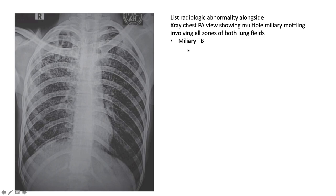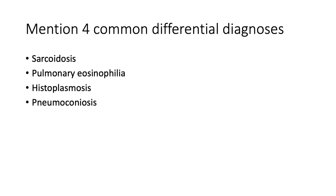This PA film shows multiple miliary mottling — the so-called millet seeds — involving both lungs bilaterally. This is miliary TB, speaking to dissemination of TB into the bloodstream. Four common differentials for this picture are sarcoidosis, pulmonary eosinophilia, histoplasmosis, and pneumoconiosis, as well as haemosiderosis in the setting of mitral stenosis.